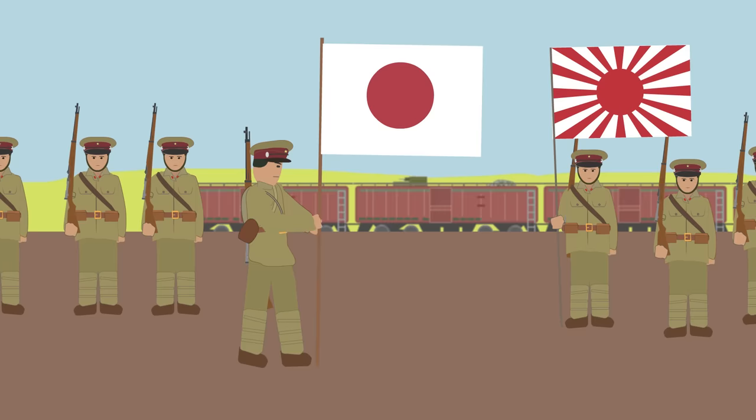The Kwantung Army, an army group of the Imperial Japanese Army, started a new phase of Japanese imperialism by invading Manchuria in 1931. The Imperial Japanese Army at this point had 17 divisions.